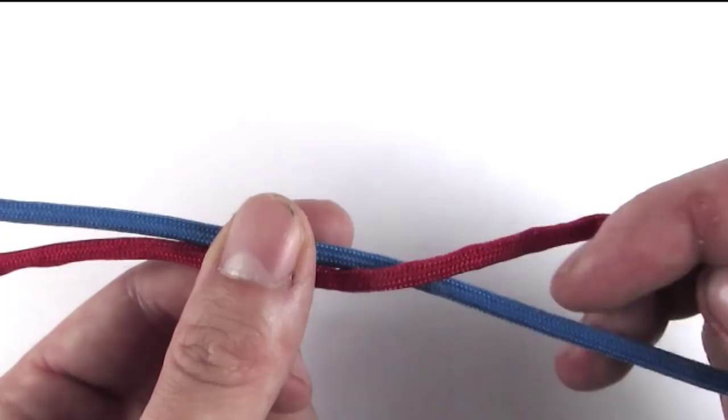I have two cords of different colors and I'm going to twist them one around the other about four or five times and then I'm going to wrap this around my mandrel.